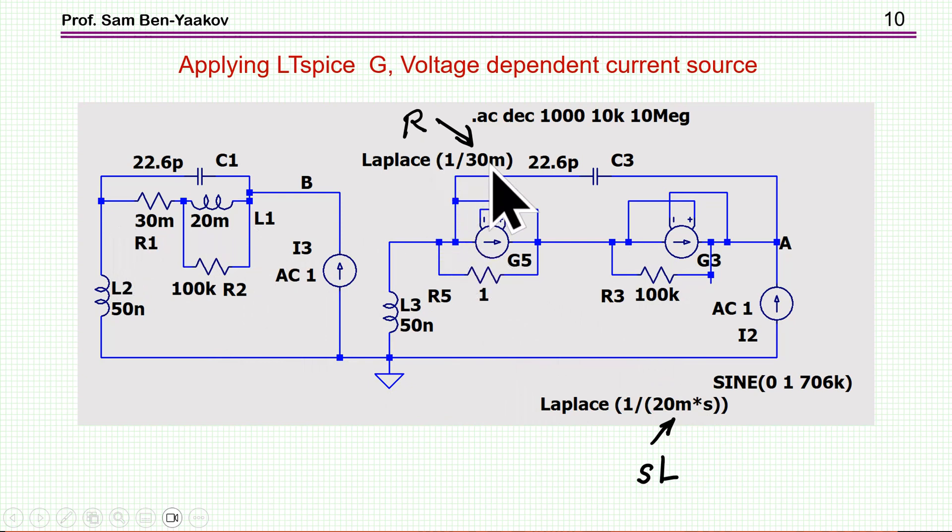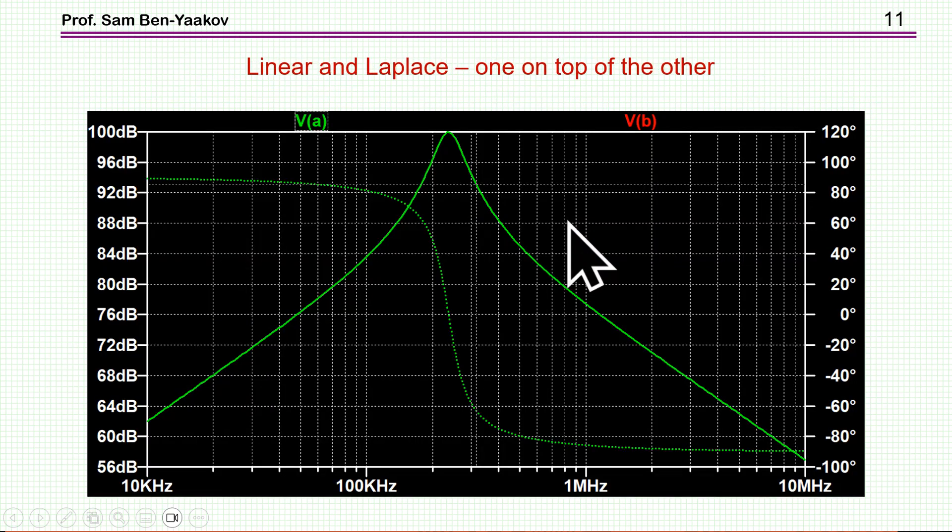So, I'm now running an AC simulation on these two. This is the linear model, and this is the Laplace realization. And here it is. We see one curve here, because the two are one on top of the other. So, it's exactly the same. So, we have the resonant, we have the inductance, we have the capacitor, and we see everything very nicely. So, it works very, very nice.